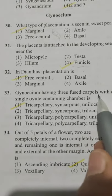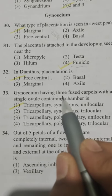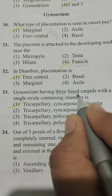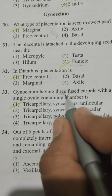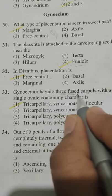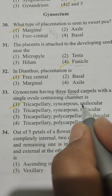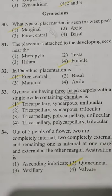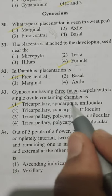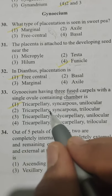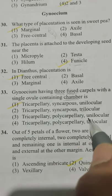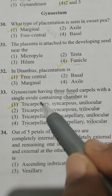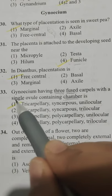Gynoecium having 3 fused carpels with a single ovule-containing chamber is described as: tricarpellary means 3 carpels; syncarpous means fused; and a single chamber means unilocular. Options: Option 1 tricarpellary syncarpous unilocular, Option 2 tricarpellary syncarpous trilocular, Option 3 tricarpellary polycarpellary unilocular, Option 4 tricarpellary polycarpellary trilocular. The correct answer is Option 1 — tricarpellary, syncarpous, unilocular.